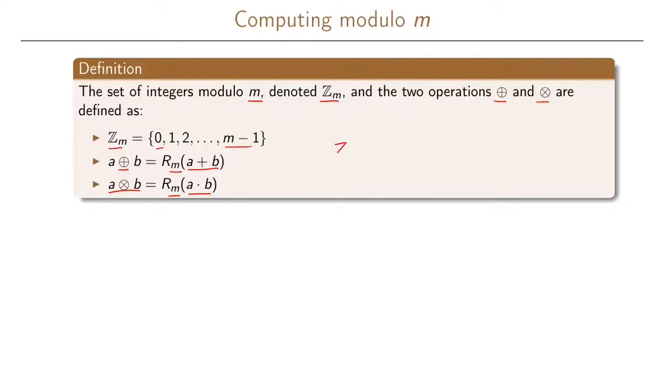So the corresponding algebraic structure here we can write as Z sub M, the operation addition modulo M, and the operation multiplication modulo M. So this is one way to denote this algebraic structure.